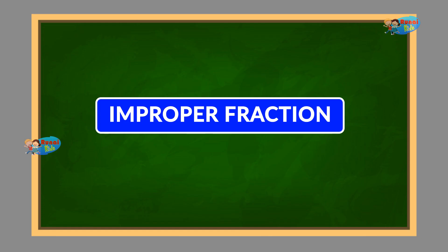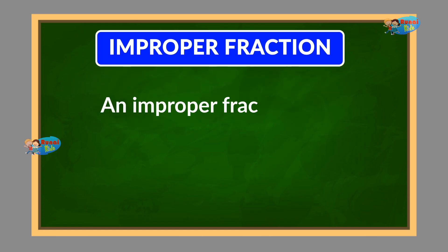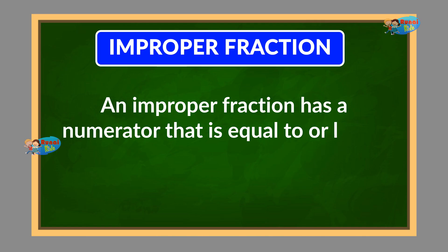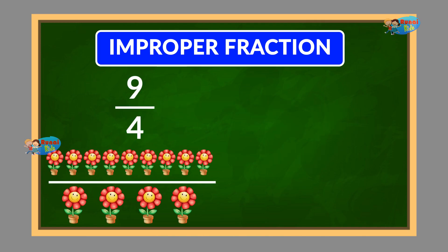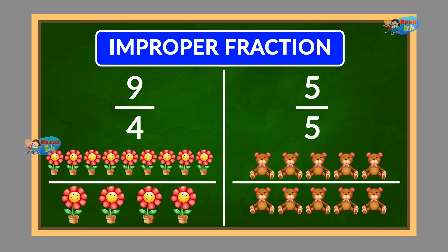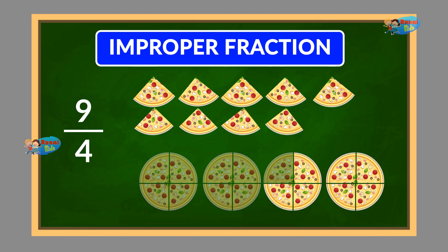Improper fraction: An improper fraction has a numerator that is equal to or larger than the denominator, like 9 by 4 or 5 by 5. These fractions are equal to or greater than 1. For instance, 9 by 4 means you have 9 parts when the whole is divided into 4 equal parts.